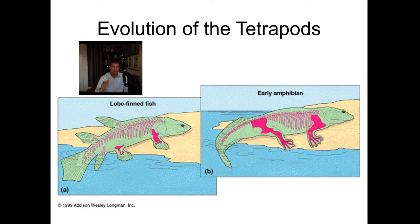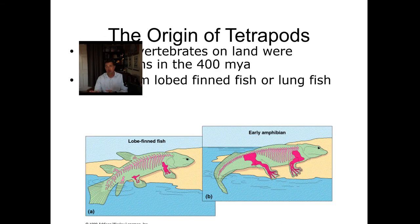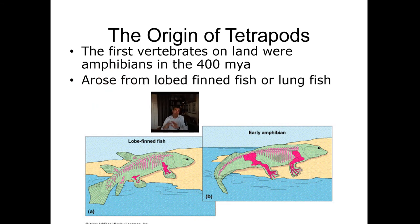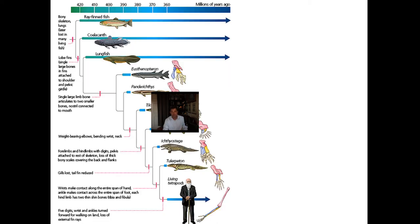The evolution of fish into amphibians is some of the best evolutionary biology examples that we have, because we have so many fossils of these animals. They happen to live in a kind of location where you would expect a lot of fossils to be produced. So we know that by looking at the fossil record, the first vertebrates on land were probably amphibians around 400 million years ago, and they came from the evolution of certain lobed fin fish or lung fish.